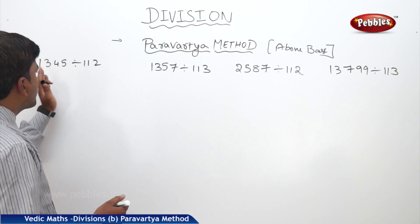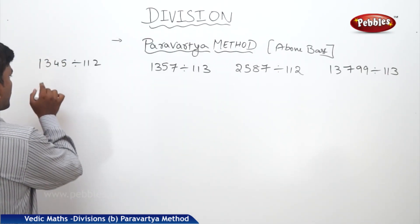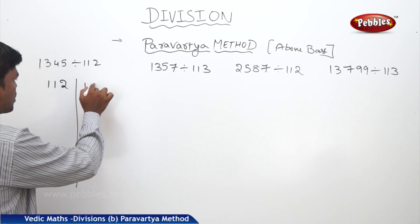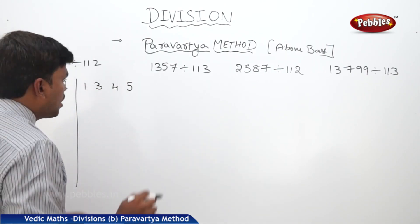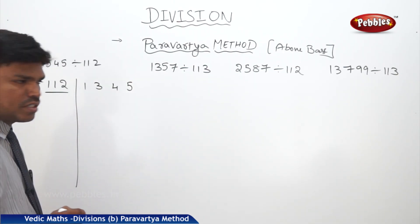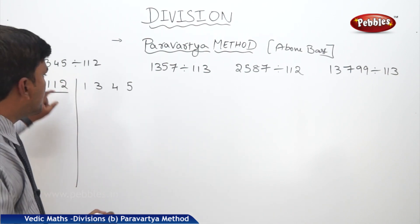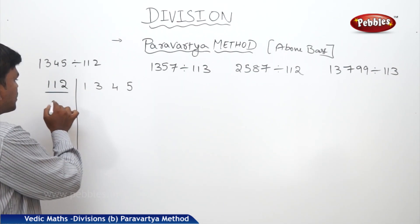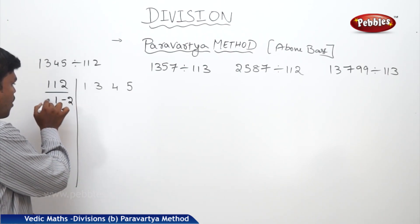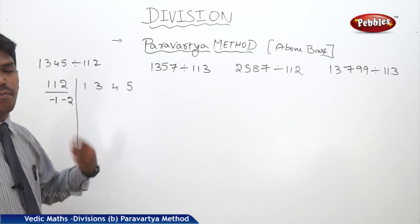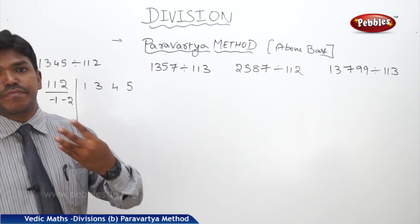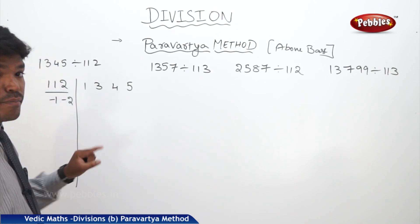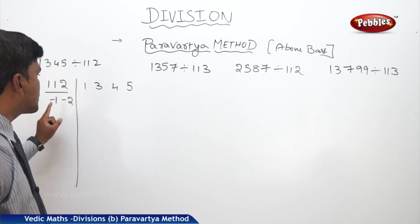For example, I want to divide 1345 by 112. Write down 1, 1, 2, then the dividend digits 1, 3, 4, 5. Now put a bar under the divisor leaving the leftmost digit. The leftmost digit here is 1. Leaving that, write the remaining digits with opposite signs — that is, negative. Paravartya means transpose. So minus 1, minus 2.